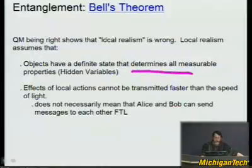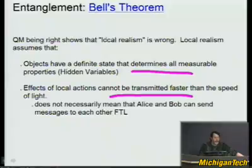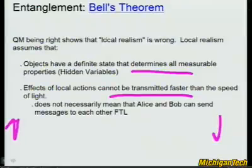Quantum mechanics shows that local realism is essentially wrong. Local realism assumed that objects have a definite state determining all measurable properties — hidden variables — and that effects of local actions cannot be transmitted faster than the speed of light. But it does seem that when you measure spin up here, the other one immediately knows to be spin down. They seem to know instantly, as if they're the same particle — as if there's some other dimension where they're not separated by any distance at all. This doesn't mean you can communicate faster than the speed of light, because you can't tell your electron to be spin up — you get 50% either way, and so does Alice. But the particles instantly seem to know, and researchers are trying to determine if there is a speed limit on that correlation, much higher than C. The common wisdom is that it's essentially instantaneous.